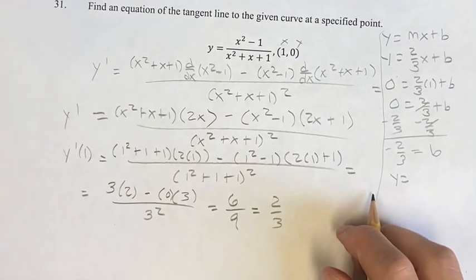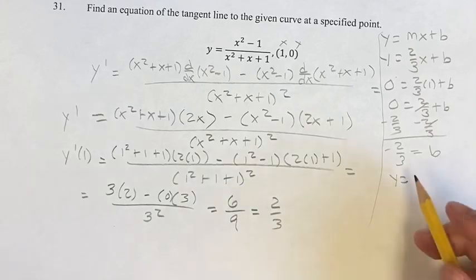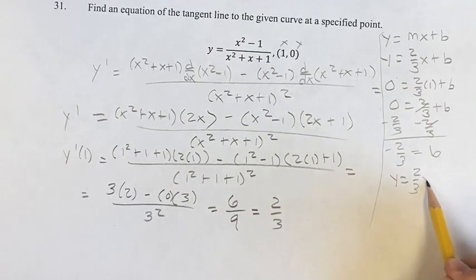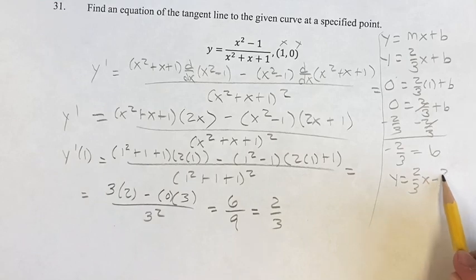So therefore the equation of the line to the given curve at the point is y is equal to 2 thirds x plus b, which is negative 2 thirds, so minus 2 thirds.